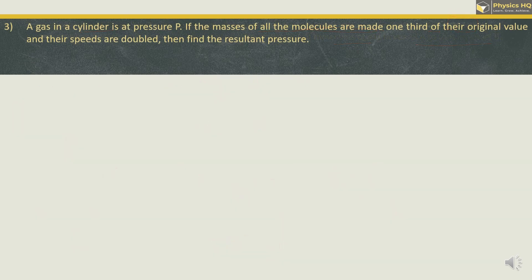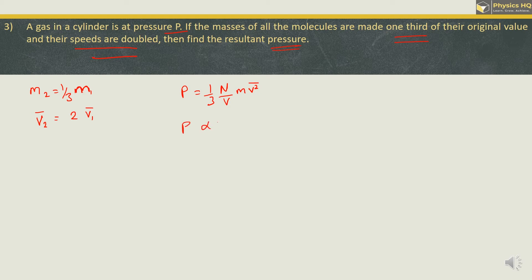A gas in a cylinder is at pressure P. If the masses of all the molecules are made one-third of their original value and their speeds are doubled, find the resultant pressure. The new mass M₂ = M₁/3, and the new velocity V₂ = 2V₁. We use the equation P = (1/3)(N/V)·M·v², so pressure is directly proportional to mass and velocity squared.